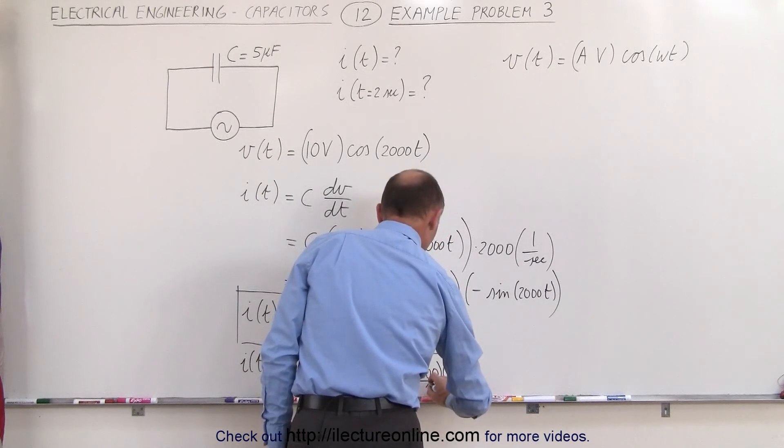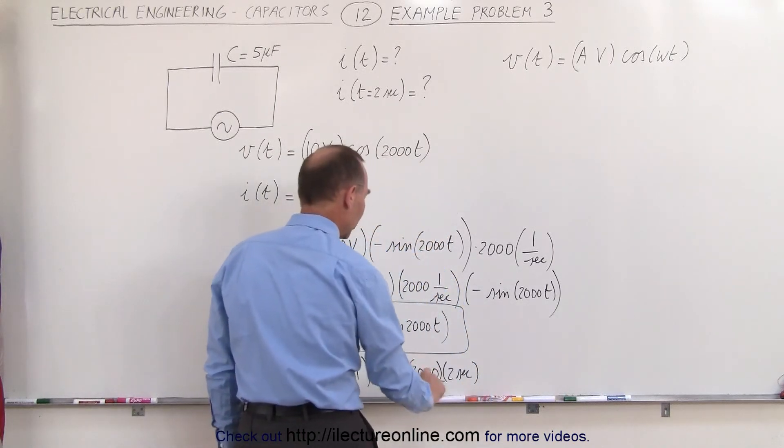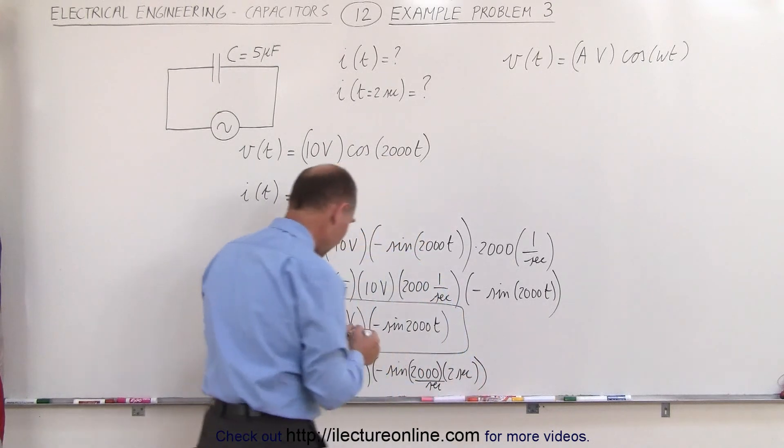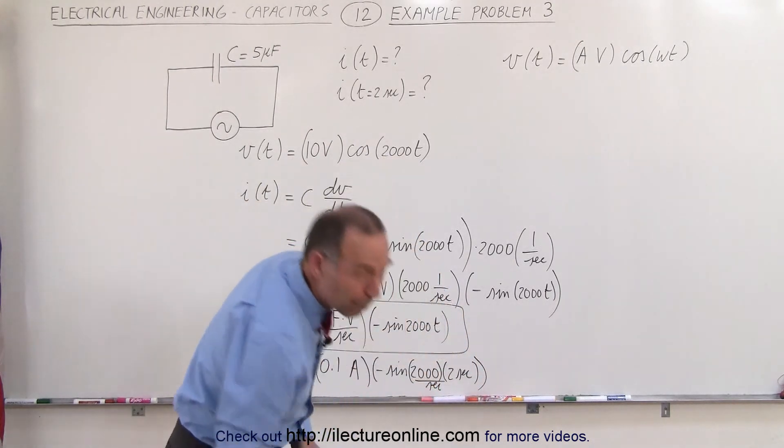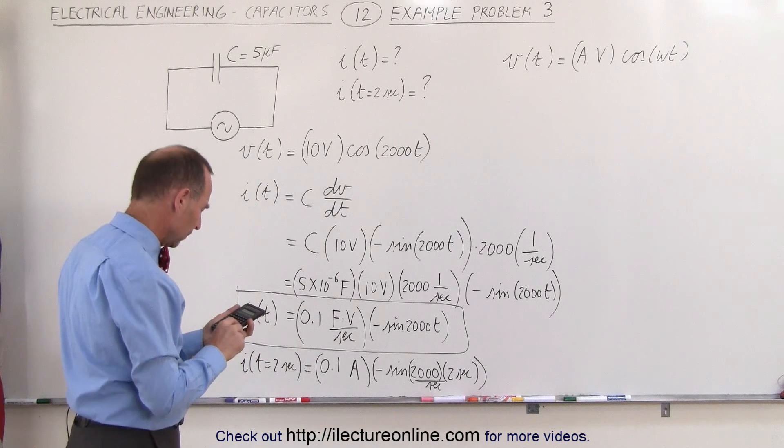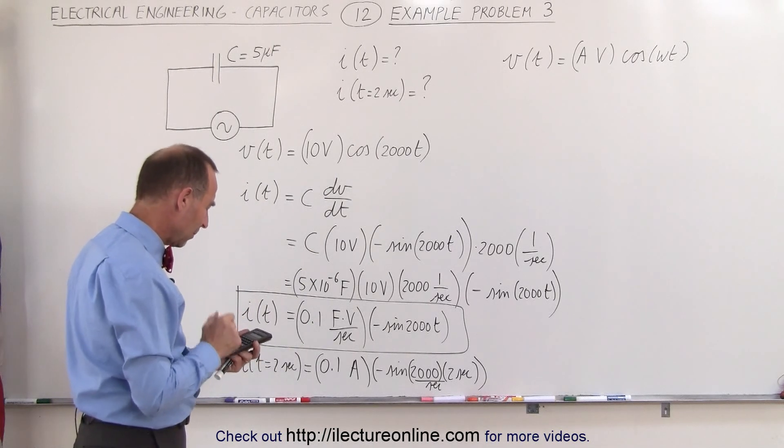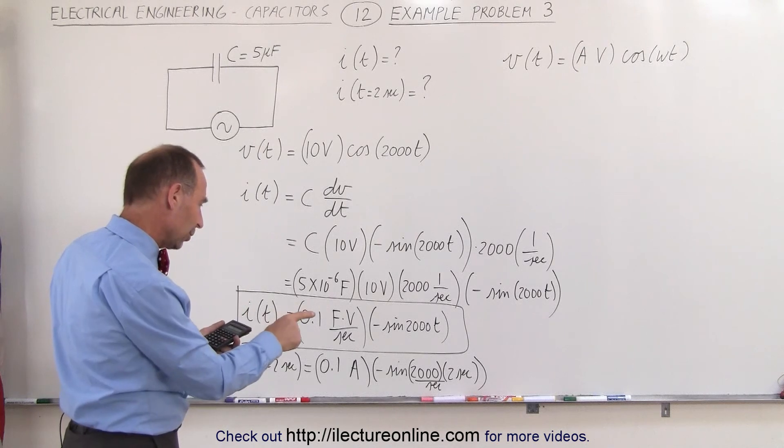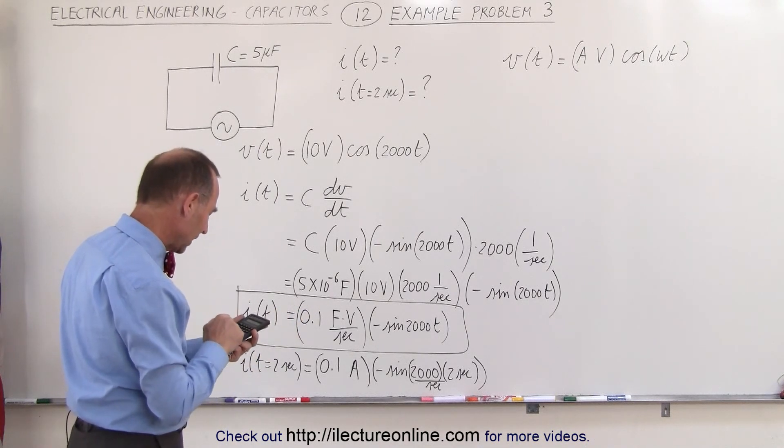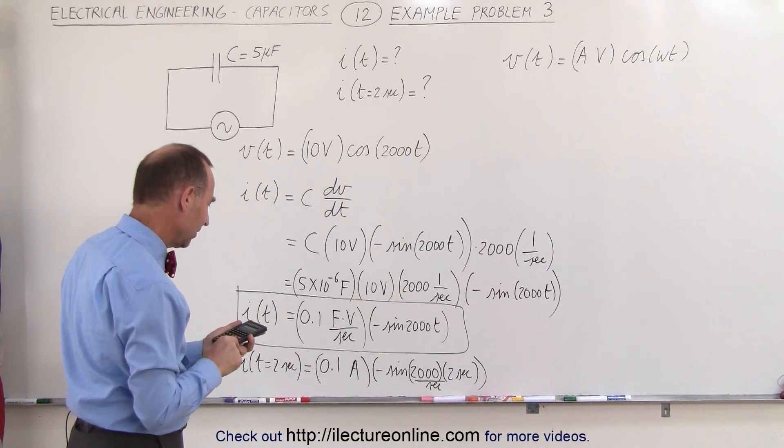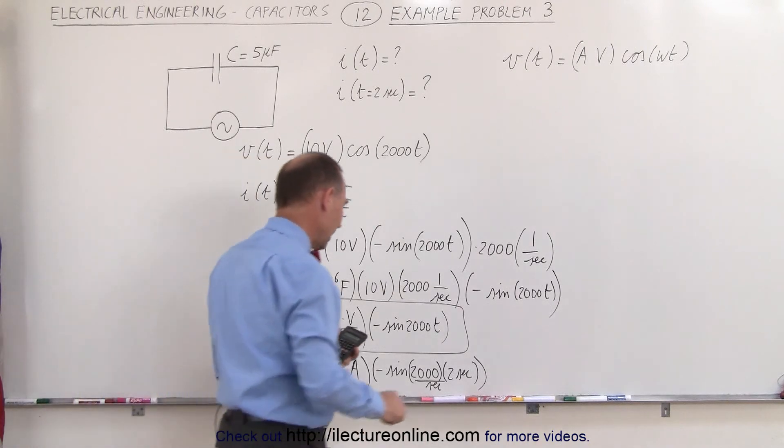And of course that would be 2000 divided by seconds, if we plug in the proper units, times 2 seconds. And now we have to make sure we put our calculator in radian mode. So I need mode 5, now that I'm in radians, so we multiply 2000 times 2, which is 4000. Take the sine of that.